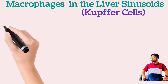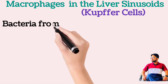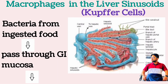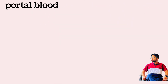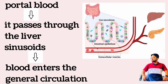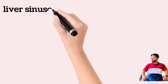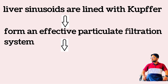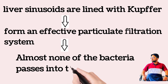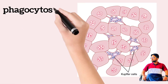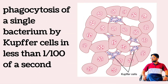Such capsules are frequently formed around tuberculosis bacteria. Macrophages in the liver sinusoids — the Kupffer cells: another route by which bacteria invade the body is through the gastrointestinal tract. Large numbers of bacteria from ingested food constantly pass through the gastrointestinal mucosa into the portal blood. Before this blood enters the general circulation, it passes through the liver sinusoids, which are lined with tissue macrophages called Kupffer cells. These cells form such an effective particulate filtration system that almost none of the bacteria from the gastrointestinal tract pass from the portal blood into the general systemic circulation.